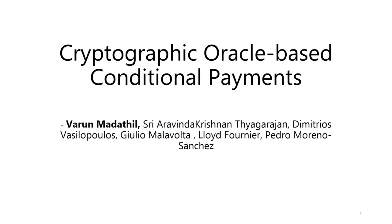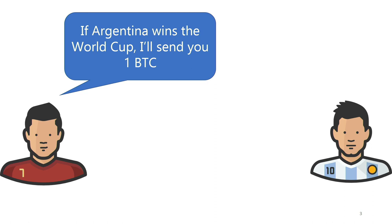I'm going to talk about cryptographic oracle-based conditional payments. To do that, I'm first going to talk about what conditional payments are in the blockchain context. To introduce this, I'm going to use Cristiano Ronaldo and Lionel Messi, who want to place a bet — and since they're tech savvy, they want to place this bet using the Bitcoin blockchain.